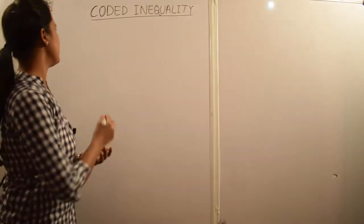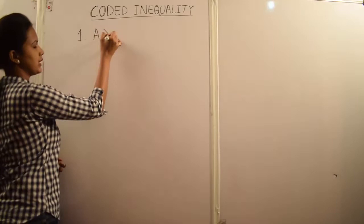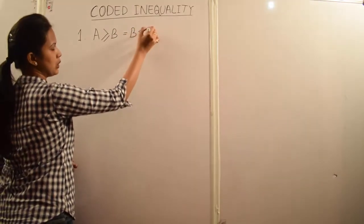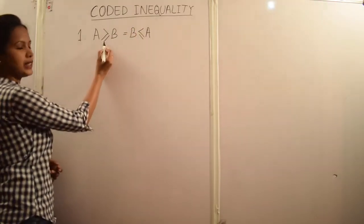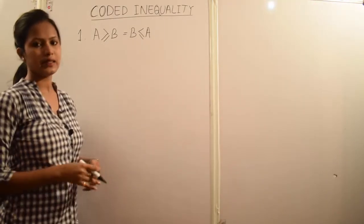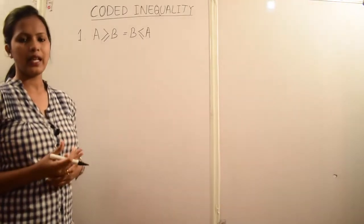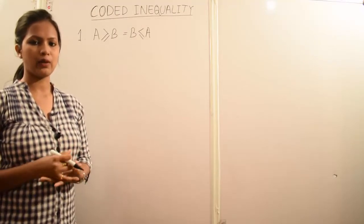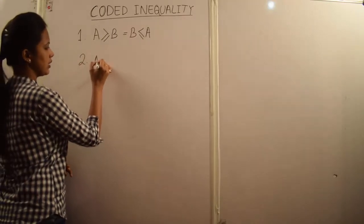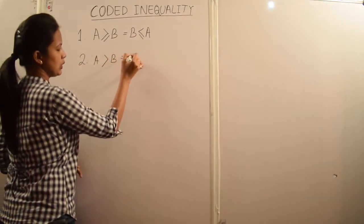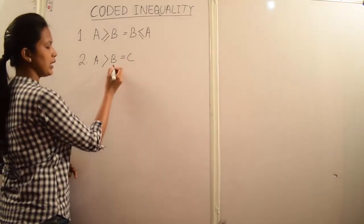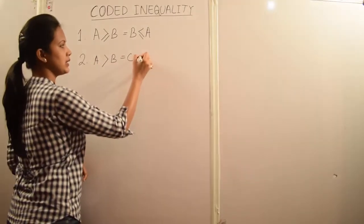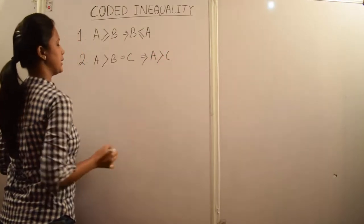To solve inequality problems we need to understand some basic rules. If A is greater than or equal to B, then it is obvious that B is less than or equal to A. Similarly, if A is greater than B, then B is less than A; or if A is less than or equal to B, then B is greater than or equal to A. The second rule type: if A is greater than B and B is equal to C, it is obvious that A is greater than C.